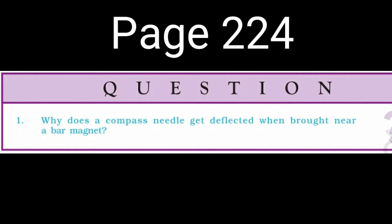Welcome to physics class. We will discuss question from page number 224: Why does a compass needle get deflected when brought near a bar magnet? The answer is that a compass needle gets deflected due to the force acting on its poles due to the magnetic field of the bar magnet.